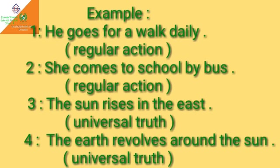Look at some examples of simple present tense. Example 1: He goes for a walk daily — this sentence indicates regular action. Example 2: She comes to school by bus — this sentence also indicates regular action. Example 3: The sun rises in the east — this sentence indicates universal truth. Example 4: The earth revolves around the sun — this sentence also indicates universal truth.